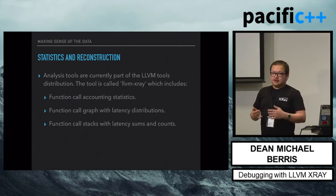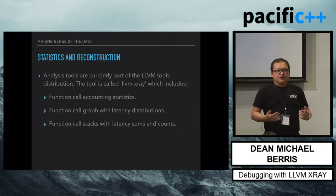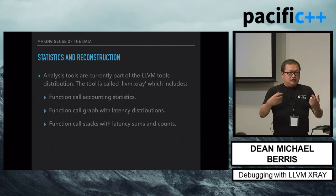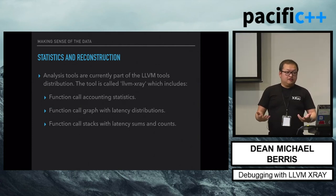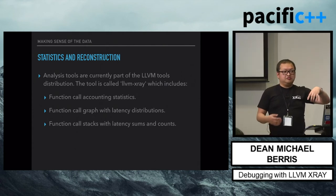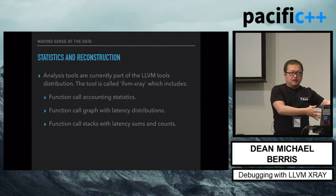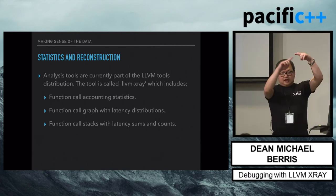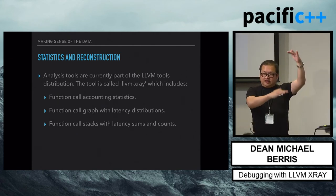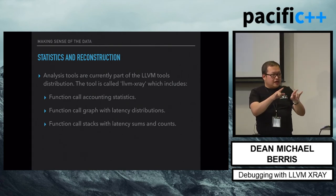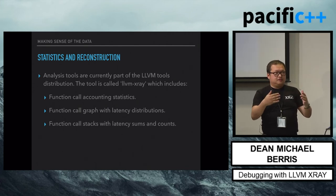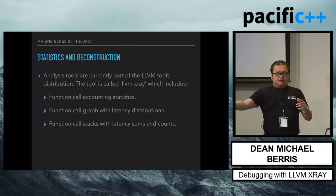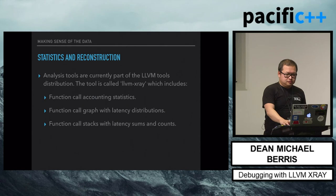Of all the functions called in your program, how many times were they called and what was the cumulative time? For every record you got, what is the distribution? You can do a call graph with latency distributions and say this function called that function and the 99th percentile of latencies was such-and-such. You can also get latency sums and counts along the call stack — for example, A called B called C showed up a thousand times, and you can compute mean, median, 99th percentile, 99.9, max. You can do interesting things with that data.